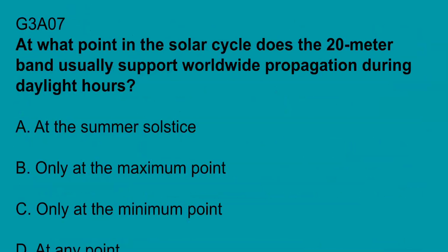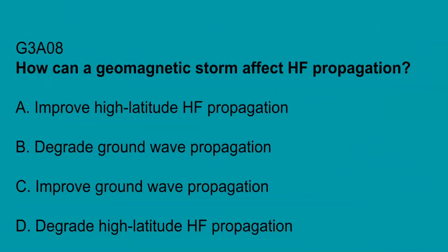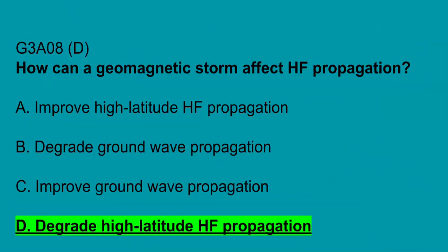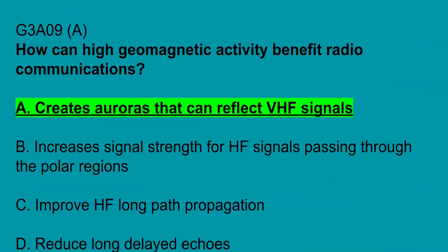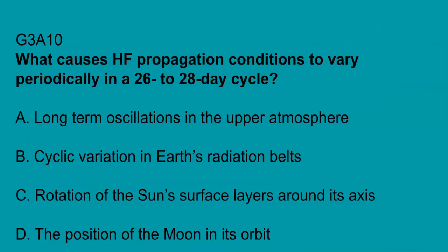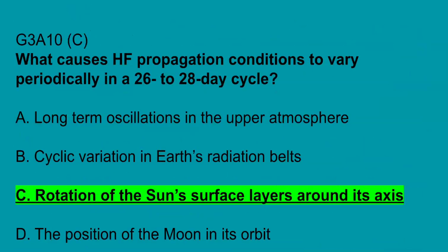G3A07: at what point in the solar cycle does the 20-meter band usually support worldwide propagation during daylight hours? At any point. G3A08: how can a geomagnetic storm affect HF propagation? It can degrade high-latitude HF propagation. G3A09: how can high geomagnetic activity benefit radio communications? It can create auroras that can reflect VHF signals. G3A10: what causes HF propagation conditions to vary periodically in a 26 to 28-day cycle? Rotation of the sun's surface layers around its axis.